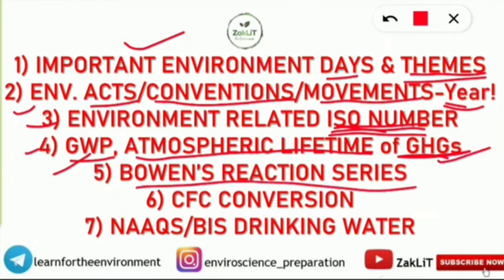The fifth topic is Bowen's reaction series. It is very important to know that series — it's also a simple concept and one of the very frequently asked topics in the UGC Net Environmental Science exam. The sixth topic is CFC conversion — from number to CFC formula and from CFC formula back to the number. This technique is very very important and simple; we have already made a video on it.